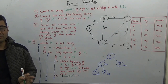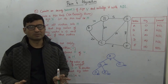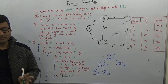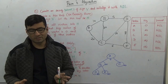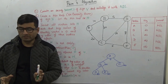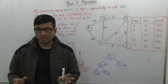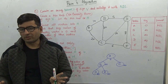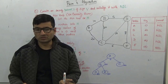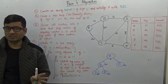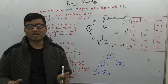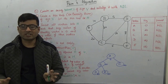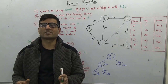Now, how do we implement it? Which data structure do we use? If we look at the algorithm, at every step we consider the minimum weight edge. As you might have guessed, the data structure we use is a priority queue, which is typically implemented using a binary heap to extract the minimum.